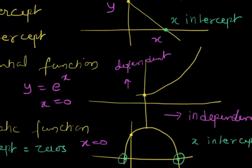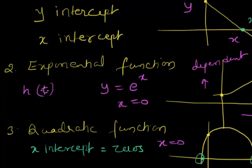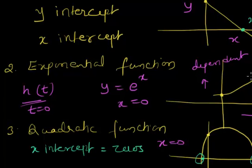When h is a function of time, you might have an equation like h as a function of t, where t is the independent variable and h(t) is the dependent variable. If you put t equals 0, it gives you the y-intercept — it is the point at the beginning of the curve. So anywhere, if you want the y-intercept, just put the independent variable equal to 0. Similarly, for x-intercept, you need to put the dependent variable equal to 0.